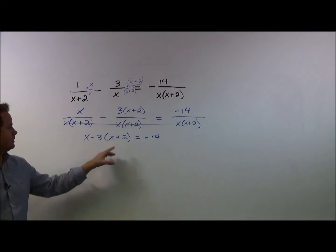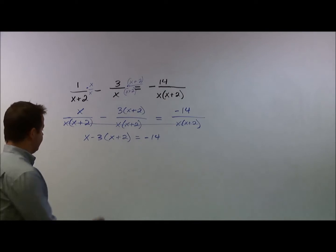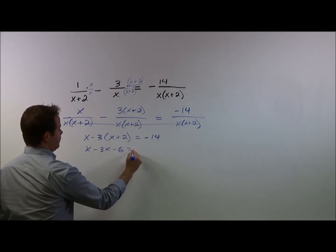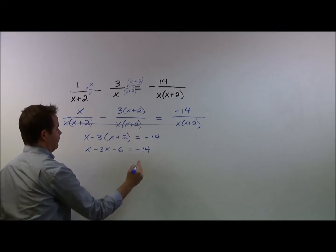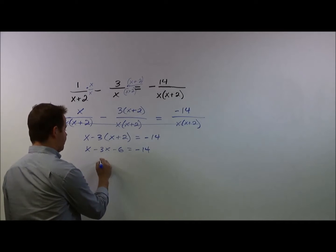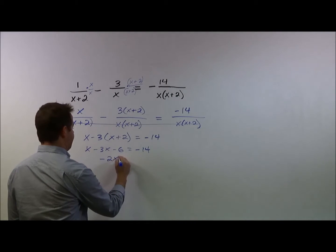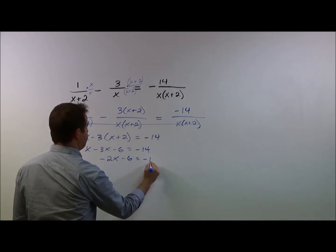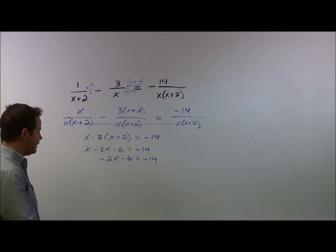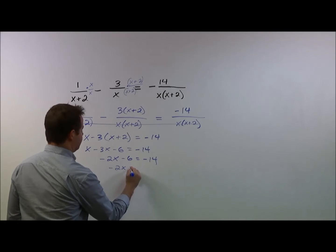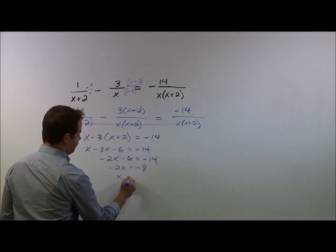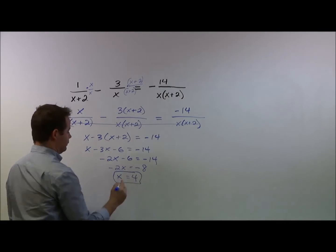Now, with this, we distribute the negative 3, and we get x minus 3x minus 6 equals negative 14. And to solve, x minus 3x will give us a negative 2x minus 6 equals negative 14. We add 6 to the other side, so we have a negative 2x equals a negative 8. And when dividing by a negative 2, we're left with x equals 4. So that's our answer for x.